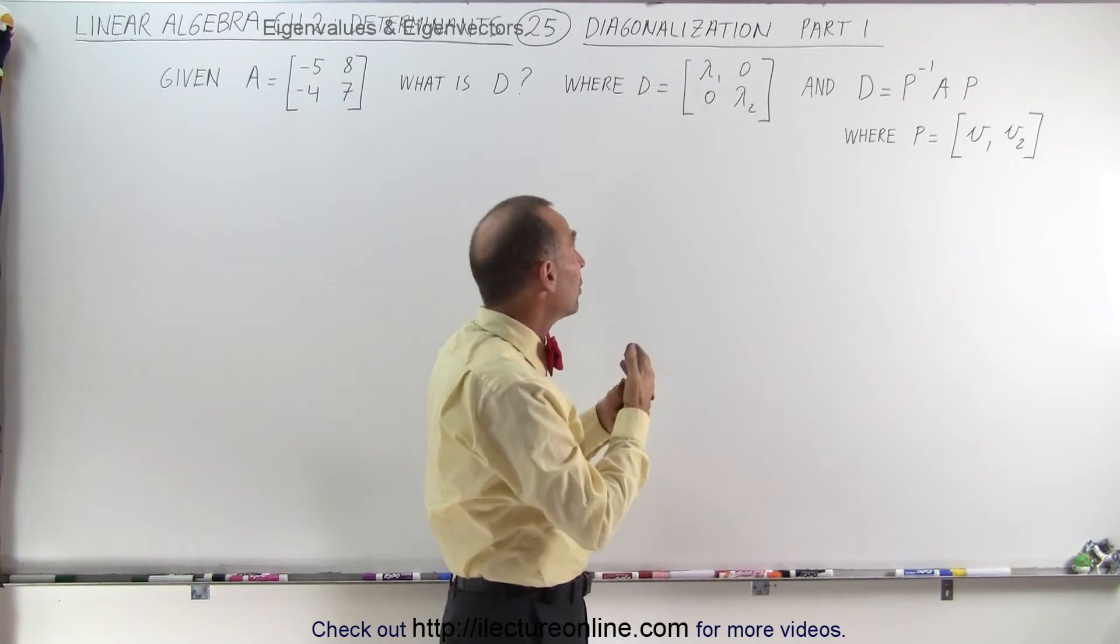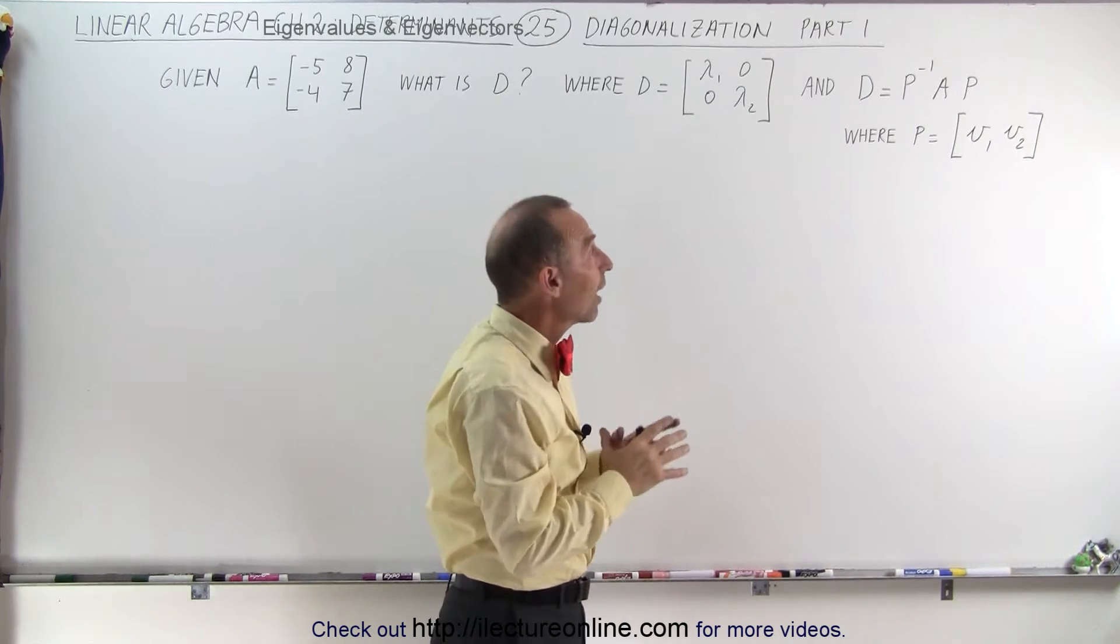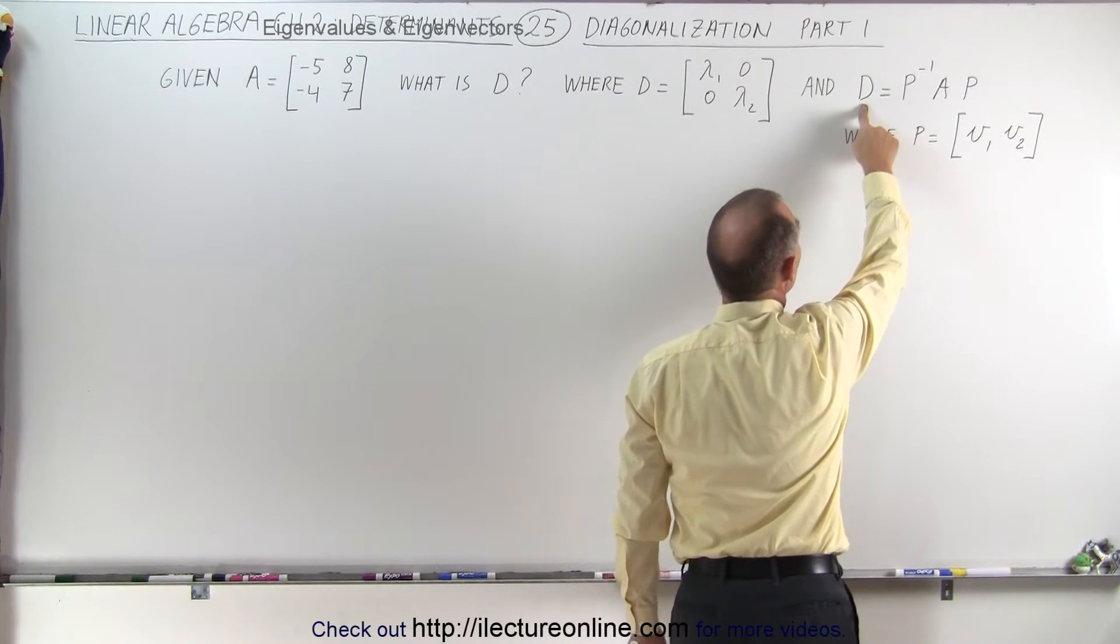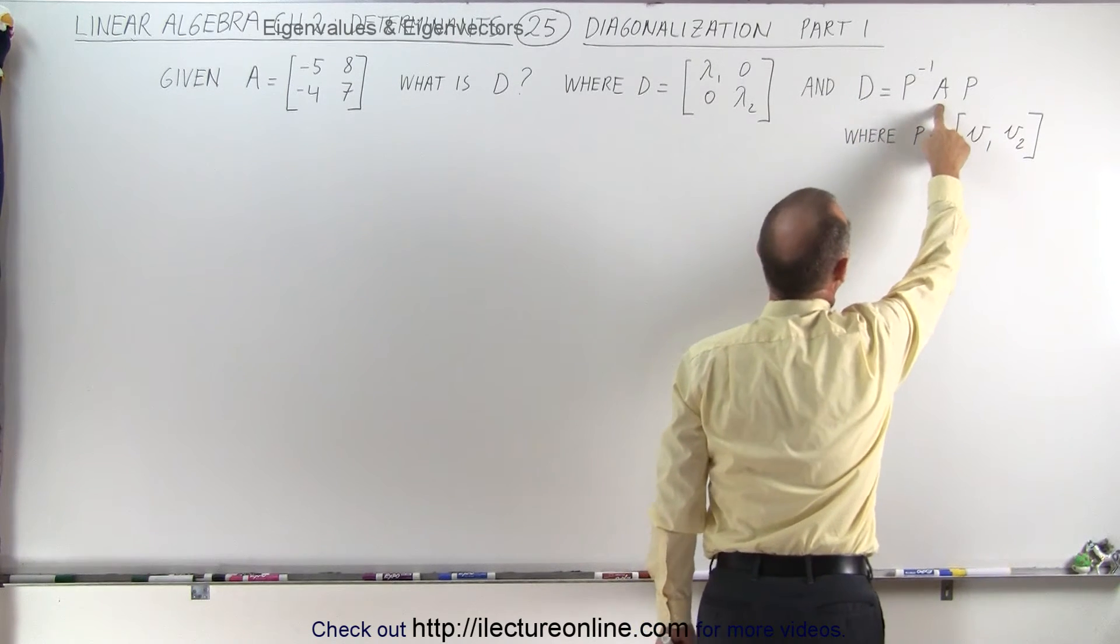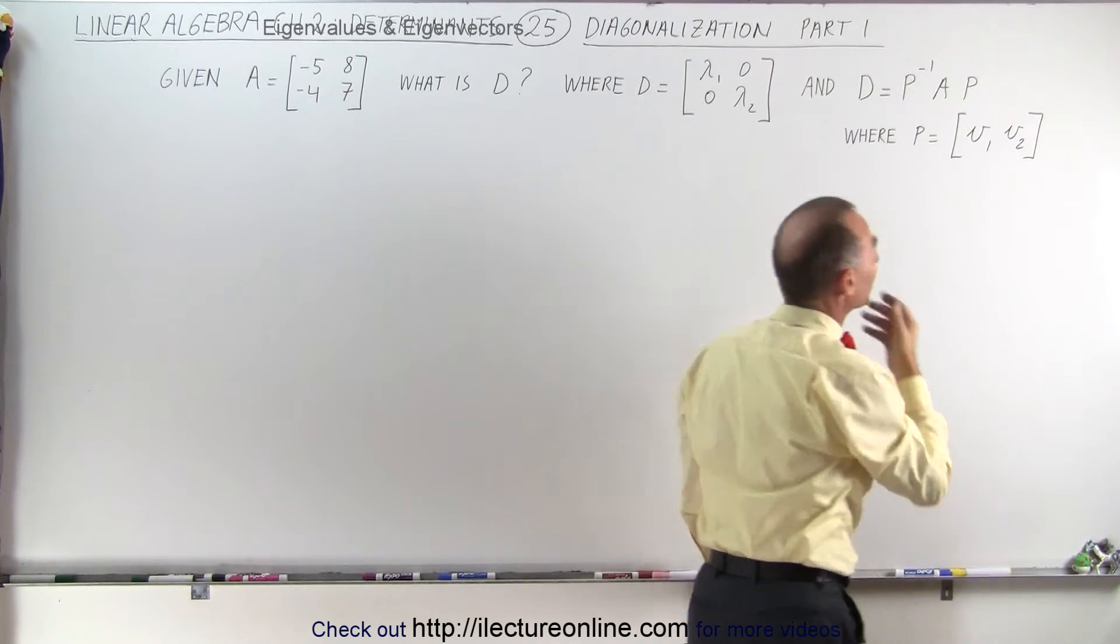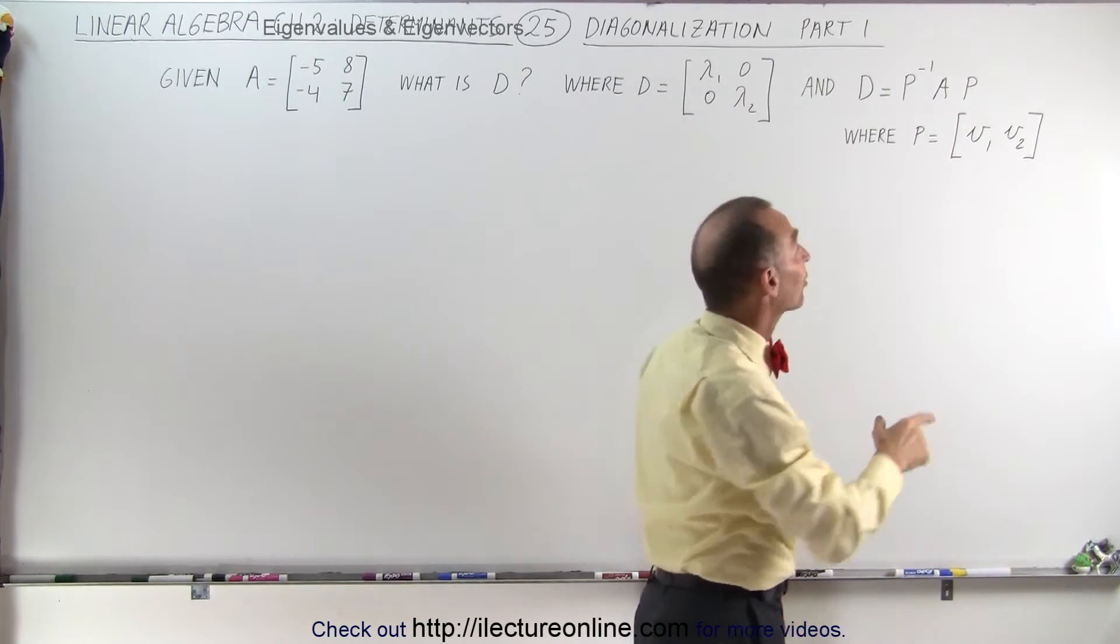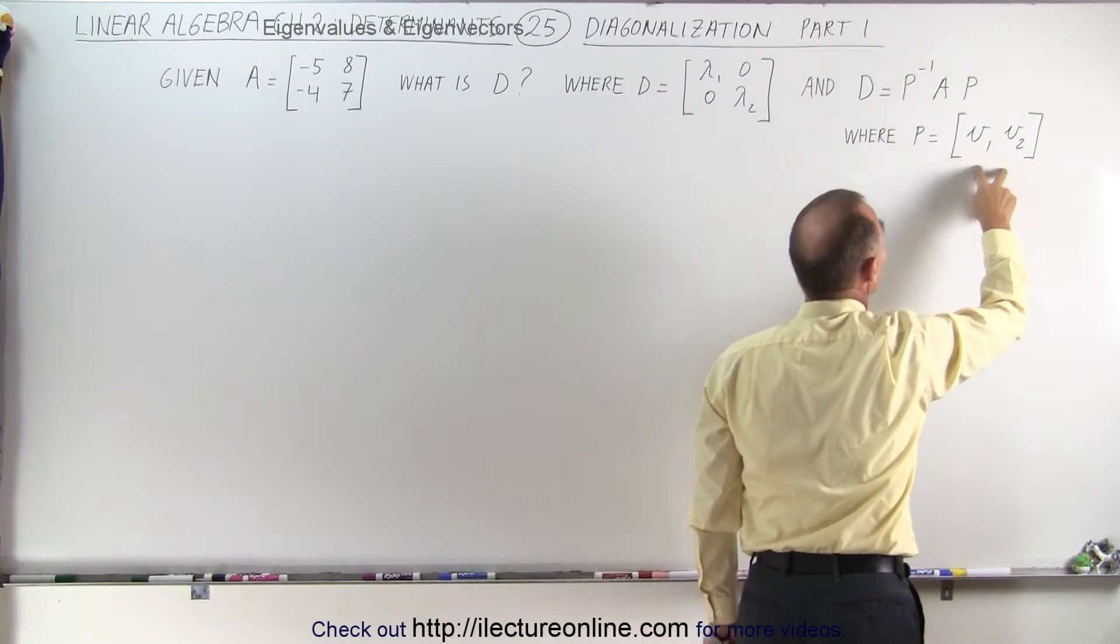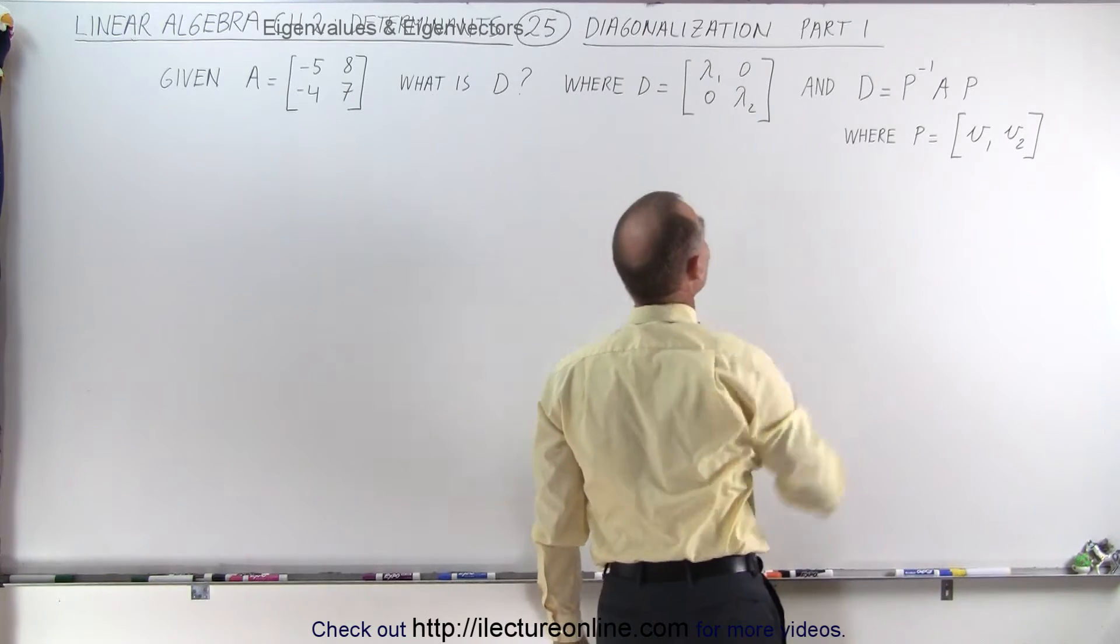You may say, well why would we want to do that? Well it turns out that you can also find the diagonalization of the matrix by taking the matrix here, multiplying it times the P matrix and the inverse P matrix. The P matrix is defined as the matrix that's made up of the eigenvectors corresponding to the two eigenvalues.